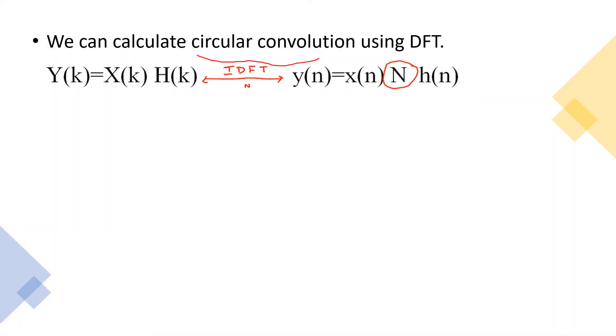We can calculate circular convolution using DFT. The product of two DFTs is equal to the circular convolution of the corresponding time domain sequences. If in frequency domain y of k equal to x of k into h of k, by using IDFT we get y of n equal to x of n circular convolution h of n.